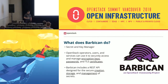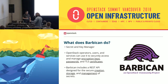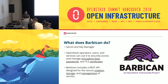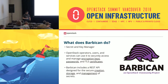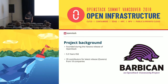Barbican is basically the secret and key manager for OpenStack. In general, it's been used to store things like encryption keys, passwords, TLS certificates, and so on. In particular, it's been used by various OpenStack services for things like volume encryption, Glance image signing, and Octavia to store certificates. It includes a REST API designed for the creation, storage, and management of secrets.